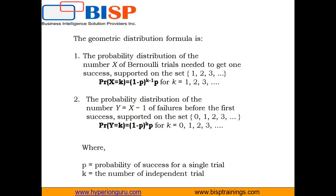There are two geometric distribution formulas. The first is the probability distribution of the number X needed to get one success, supported on the set {1, 2, 3, ...}. The second is the probability distribution of the number Y = X − 1 of failures before the first success, supported on the set {0, 1, 2, 3, ...}.